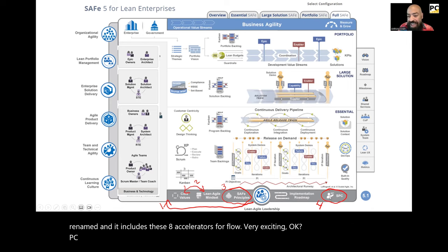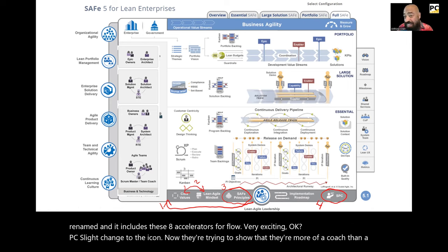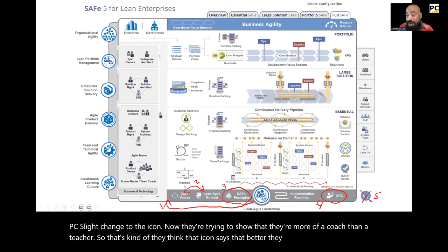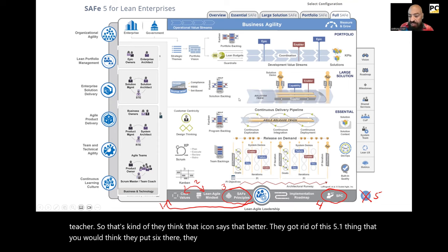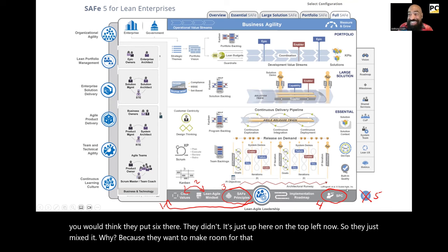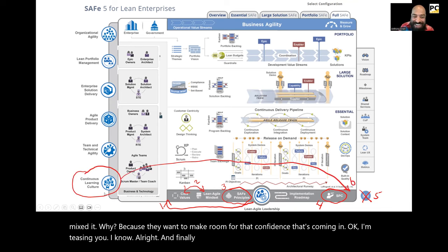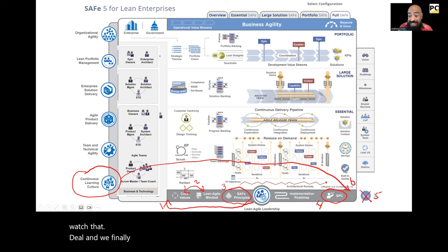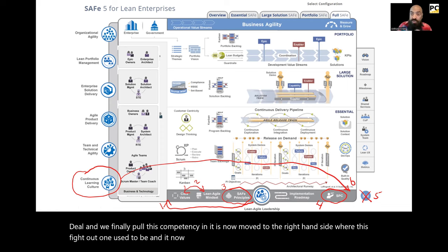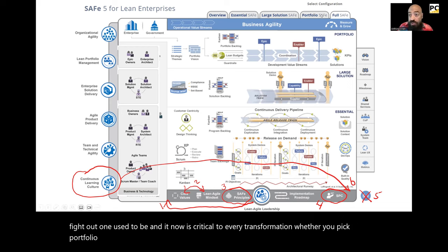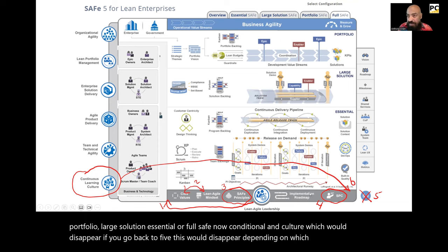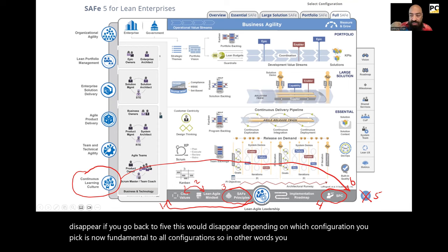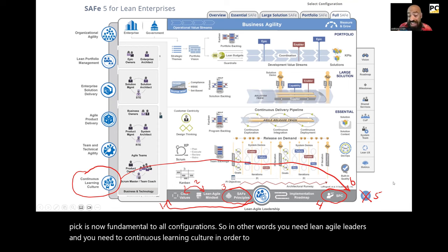The SPC icon has a slight change — they're trying to show they're more of a coach than a teacher. They got rid of the '5.1' label; it's just up in the top left now, to make room for the incoming competency. And finally, 'Continuous Learning Culture,' which used to be at the bottom, has now moved to the right-hand side where 5.1 used to be. It is now critical to every transformation — portfolio, large solution, essential, or full SAFe. So now you need lean-agile leaders and a continuous learning culture in order to achieve business agility.